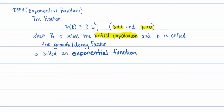Let's go ahead and define it again. Exponential functions are functions of the form p of t equals p-naught times b to the t, where b is called the base. P-naught is called the initial population. B is also called the growth or decay factor. Altogether, that is known as an exponential function, with p-naught being the initial value and b being the growth or decay factor.